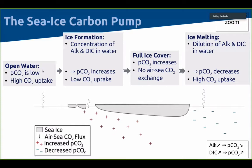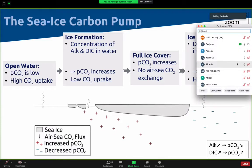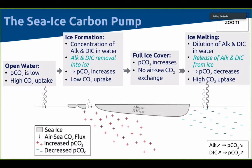That's the picture if sea ice is considered as pure fresh water, which is the case in most climate models. But sea ice is not pure fresh water — it contains a little bit of salinity, and also very importantly a little bit of alkalinity and DIC. If you do take that into account, during ice formation the ice traps alkalinity and DIC, and it traps more alkalinity than DIC. That leads to a further increase of pCO₂ and even lower CO₂ uptake. During ice melt, this excess of alkalinity compared to DIC is released from the ice to the ocean, leading to a further decrease of pCO₂.